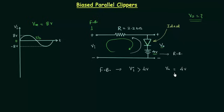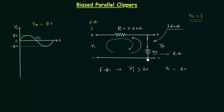Let's see how I got output voltage equal to 4 volts. The diode is forward biased, so I will replace it with a short circuit because the diode is ideal — in the case of an ideal diode we replace it with a short circuit — and you can clearly see the output voltage is equal to 4 volts.